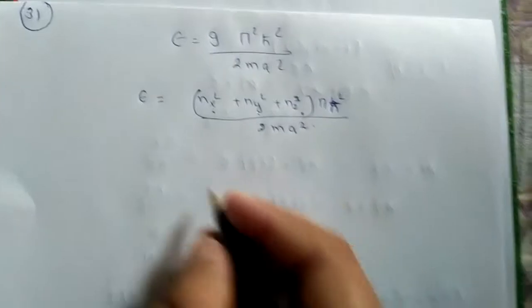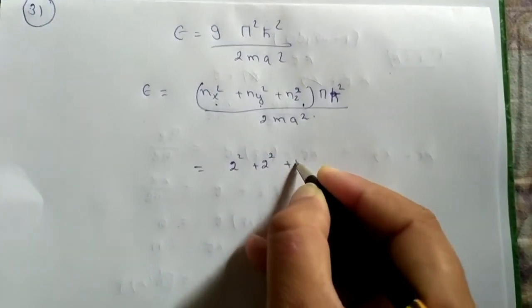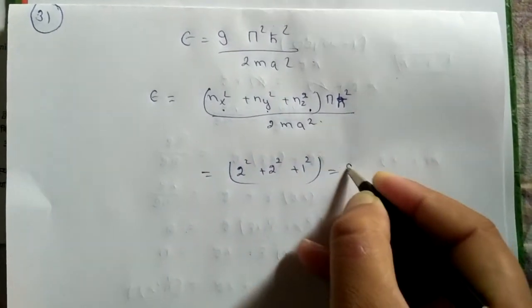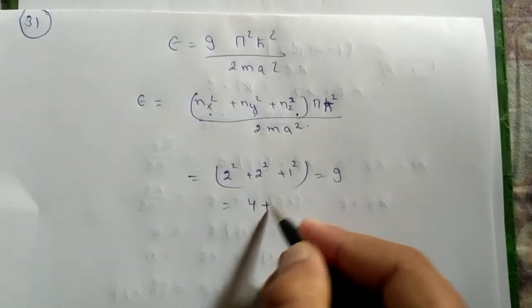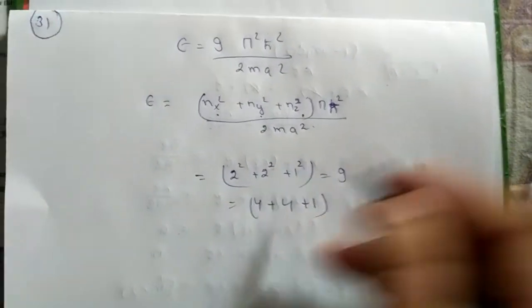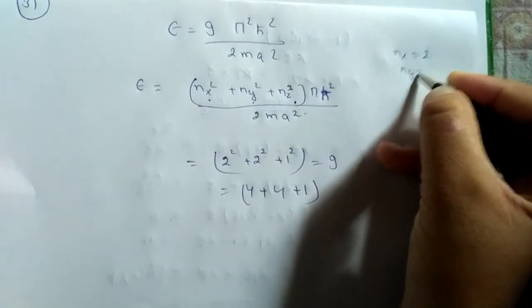For 9, we can say 2 square plus 2 square plus 1 square equals 9 according to this formula, that is equal to 4 plus 4 plus 1. So our 2, 2, 1 - nx value can be 2, ny can also be 2, and nz is 1 corresponding to this.